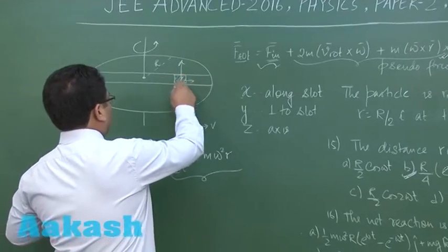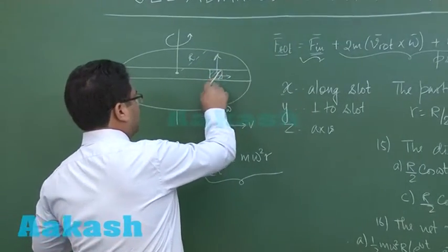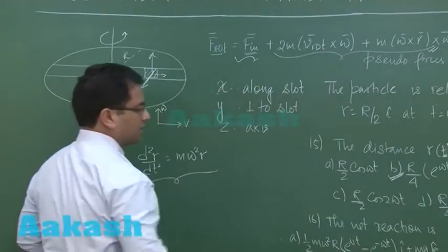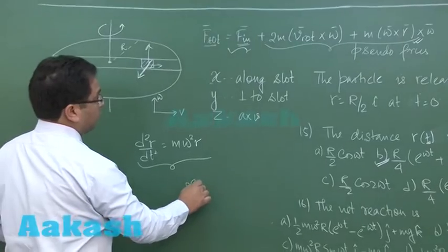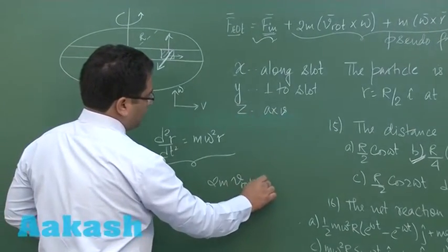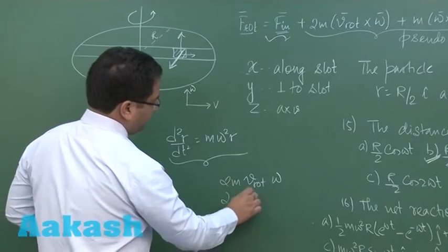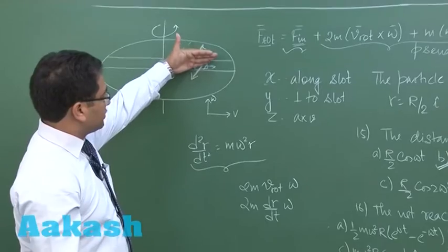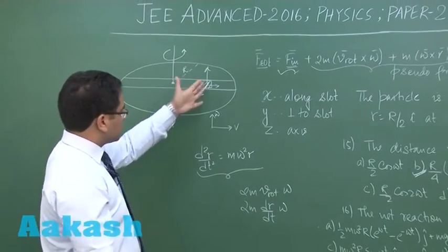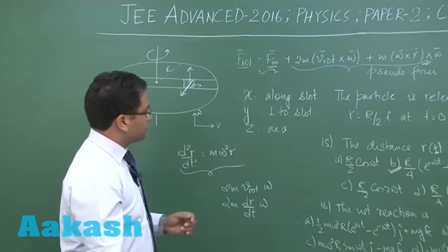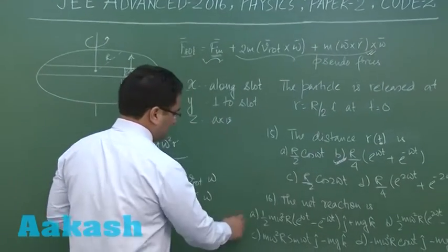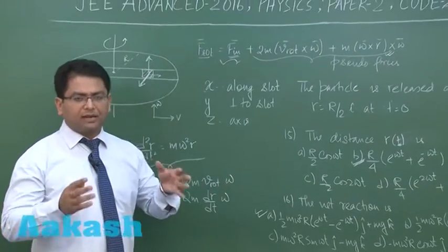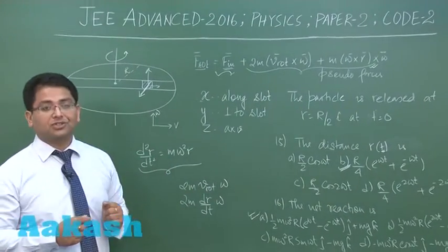So the wall would be pushing it against this particular force. Now here you get the magnitude is 2m V rotation into omega. And 2m V rotation is dR by dt into omega, so that would be the force by which it would be pushing in this direction. So normal reaction would be balancing that. You put the value of R from here and you would get option number A to be correct. So quite different, you know, you have to put nice level of thought in order to solve this question.